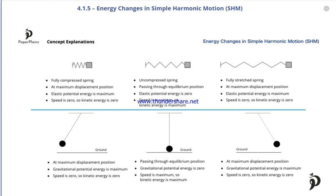So in the case of a simple pendulum, energy conversion happens between gravitational potential energy and kinetic energy. This wraps up our discussion about energy changes in simple harmonic motion and completes the final video of subtopic 4.1.